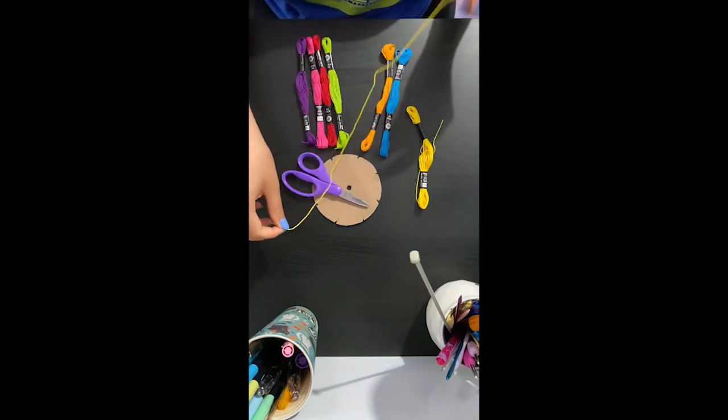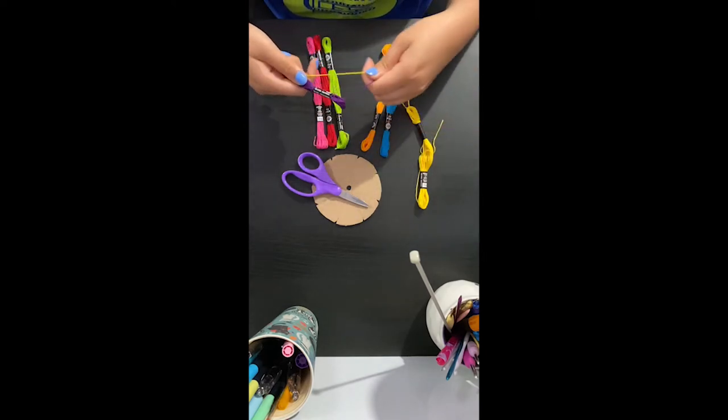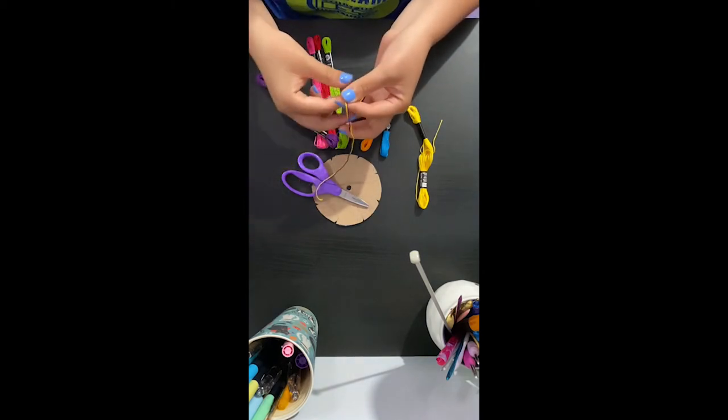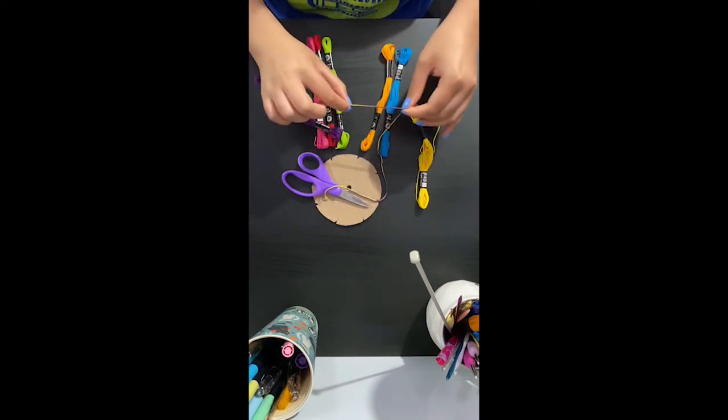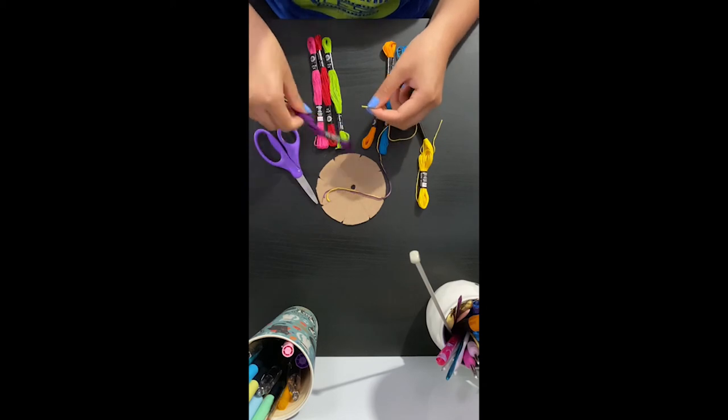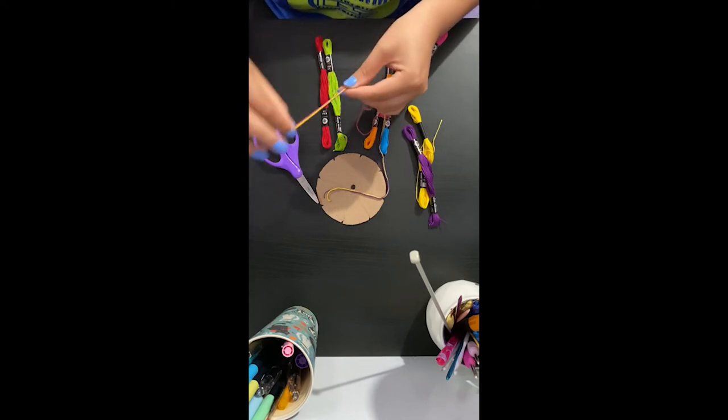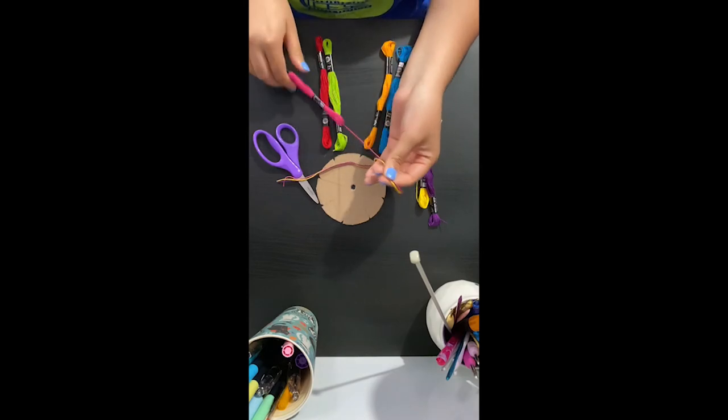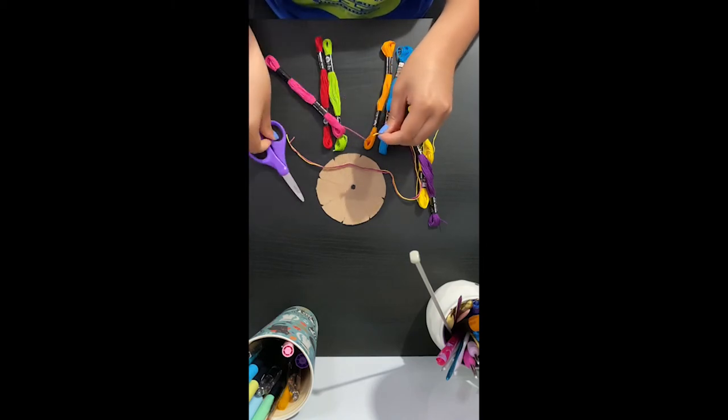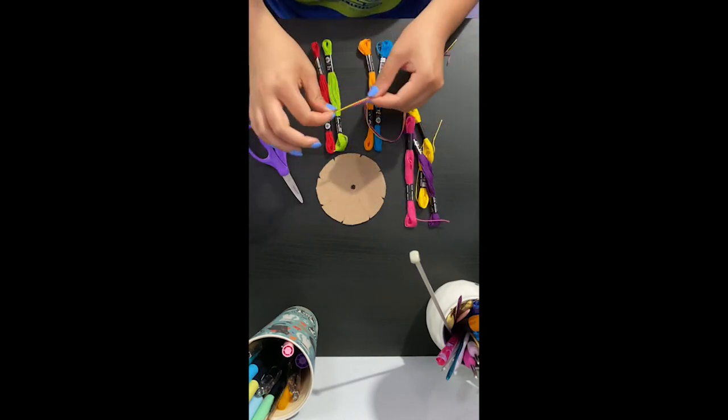Once you have your first string, you can use this string to measure out your new colors. You can grab that one and then pull string through here. Match up this end and then you're going to pull it so they're straight. Pull them together nice and even. And you're going to cut it to the same length. And you're going to do this with your next color. And you're going to keep going until you have all seven of your strings cut.